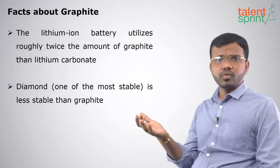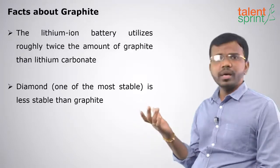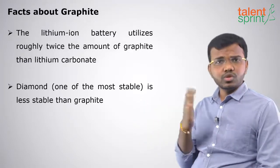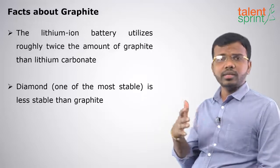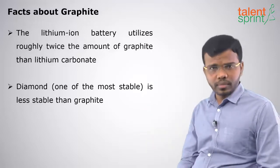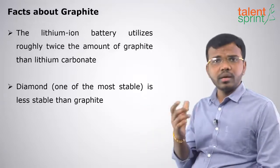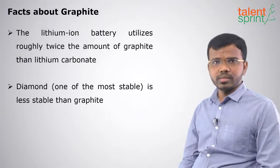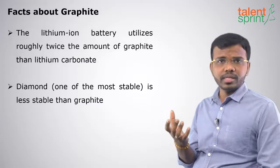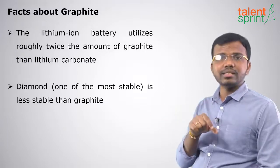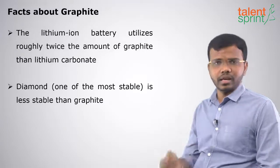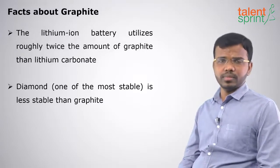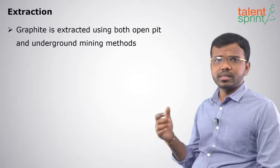The lithium-ion battery, which we generally use in mobile phones, consumes twice as much graphite as lithium carbonate. And diamond, which is considered one of the most stable elements, is actually lesser stable than graphite. Graphite is the most stable element.